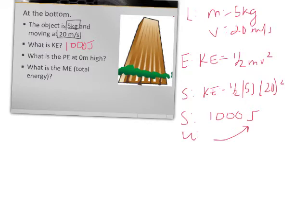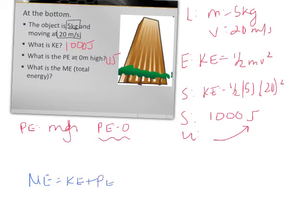The next question is asking what is PE at zero meters. So at the very bottom you're at zero meters in height, and if you look at our equation it's PE equals MGH, if I plug in a zero for the H, what's going to happen to my PE? PE is going to be equal to zero. And then if we know that ME is equal to KE plus PE, and KE is 1,000, and PE is zero, then ME, once again, equals 1,000 joules.